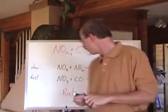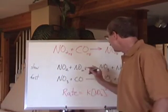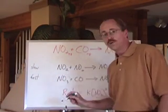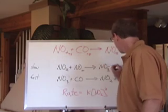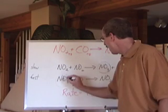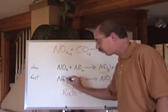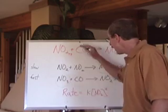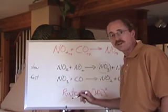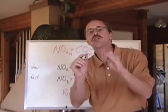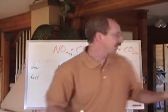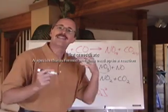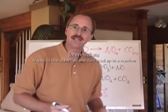By the way, because NO3 was present in that reaction — formed in the first step and then used in the second step — but is not found in the net reaction, it's called an intermediate, because it's formed and then used up. It's an intermediate chemical.